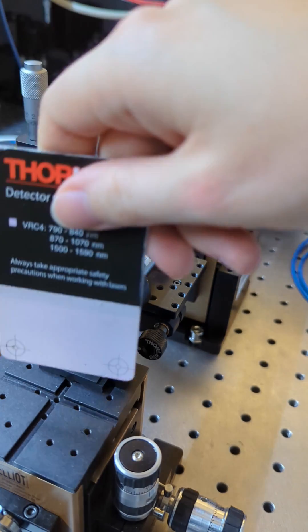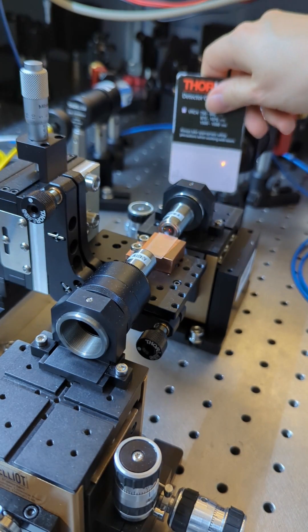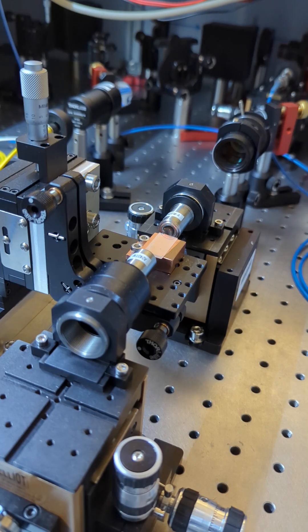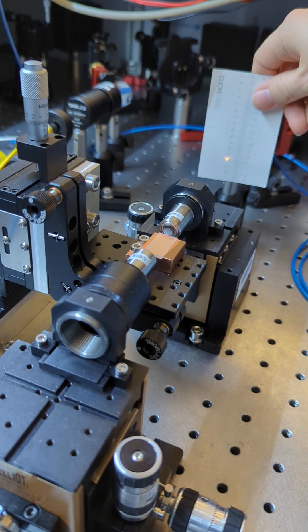We overlap the two lasers here in front of the waveguide and if we then look behind the waveguide you see that we've generated light in a new color and this new light is also visible with my white card and therefore with the human eye.